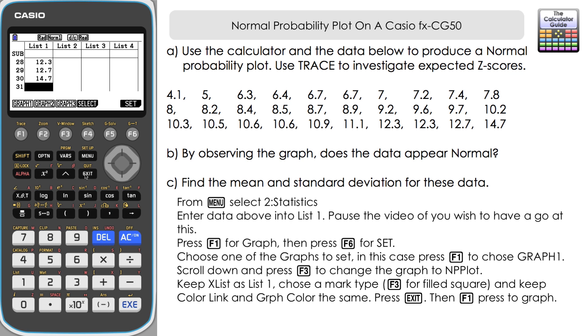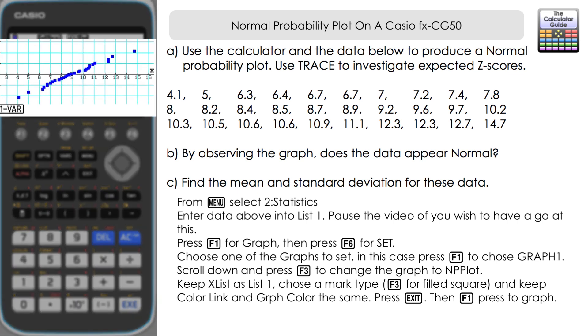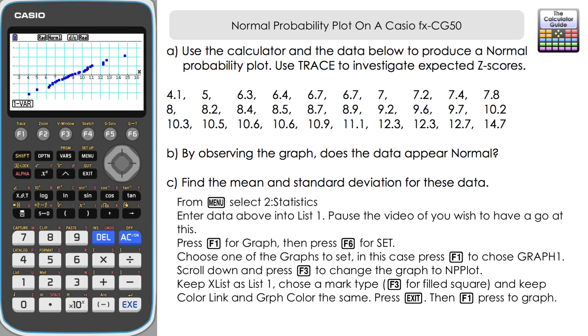Now we know that we've got the settings stored there for graph one to produce a probability plot. So it's F1. And here we have our plot. So there's a couple of things straight away.